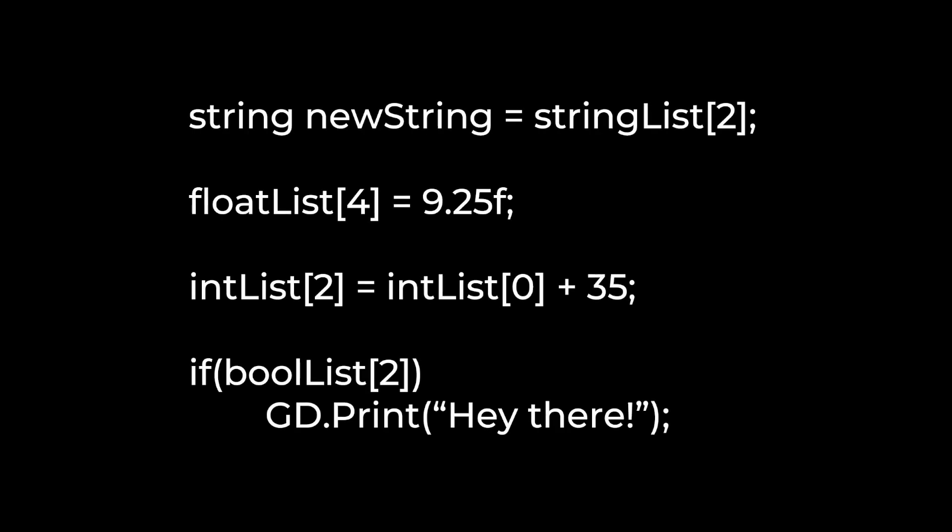If we want to interact with our list, we simply do so the same way we would interact with an array. After the list name, we put opening and closing square brackets followed by the index of the list item we want to interact with, and we can retrieve or modify the value stored that way. Just like arrays, indexes for lists start at zero, and the highest index in a list is one less than the number of elements. That will be the case for every instance of indexing you come across in C#.